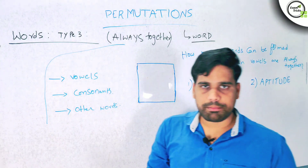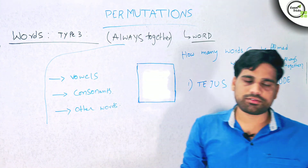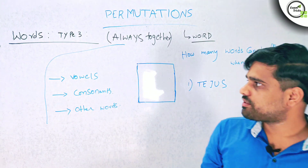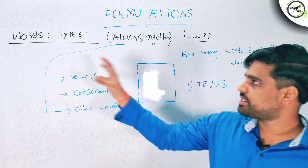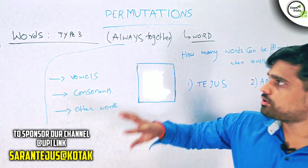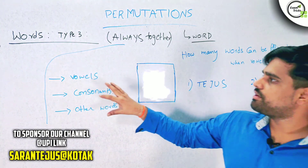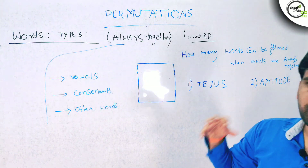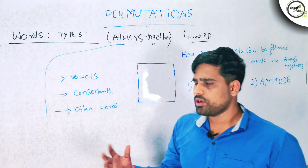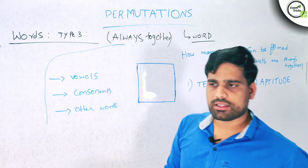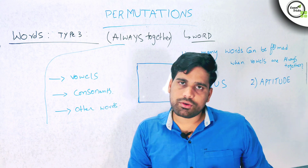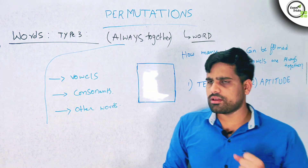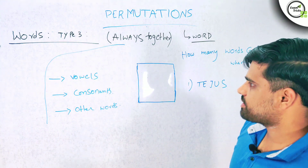We will cover the basics, then we will cover the numbers, and we will cover the word. In this video, Type 3, we will cover always together and never together. We will cover 2 models in this video.